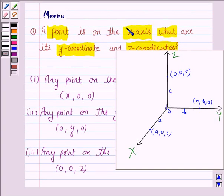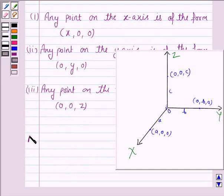Now, here we are given a point on the x-axis, so its y and z-coordinates will be 0. Hence, the answer to this question is: y and z-coordinates are 0.